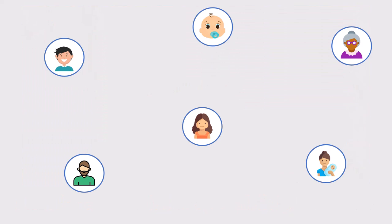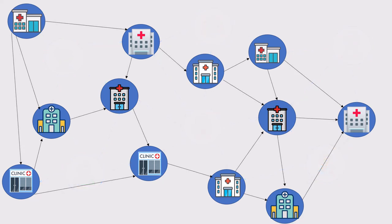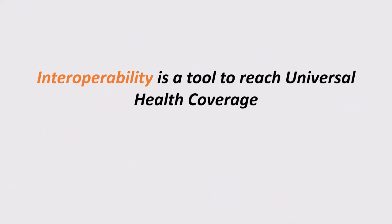With the advent of universal health coverage, everyone should be able to get health services from any health facility anytime and anywhere. This forms a web of interactions between patients and health facilities, and this web can only be realized if the systems being used by facilities are interoperable. Interoperability is a vital tool to have universal health coverage.